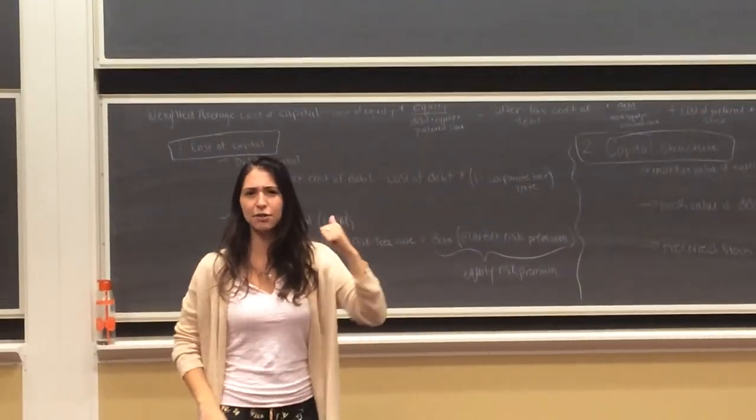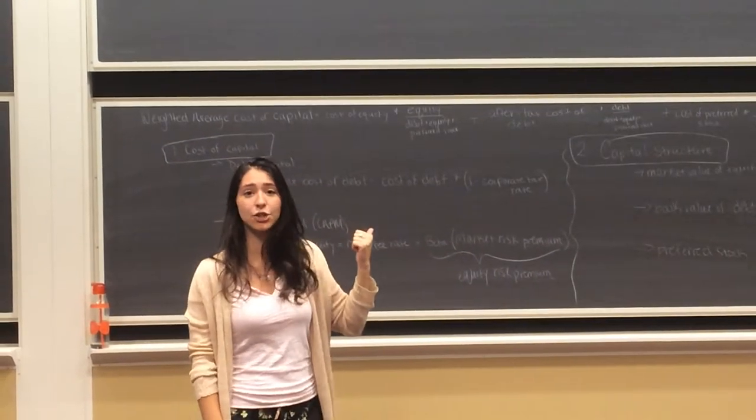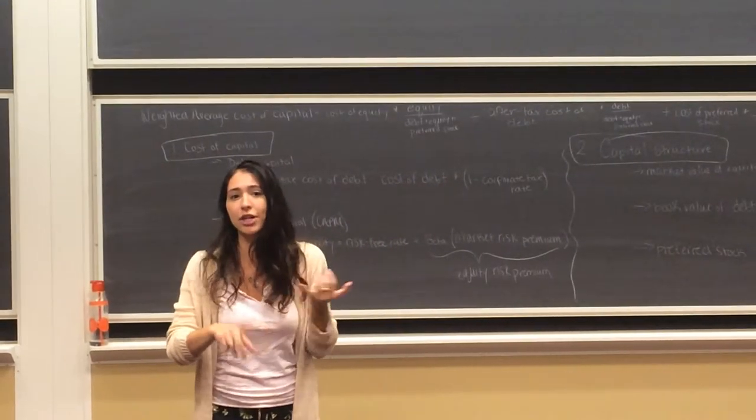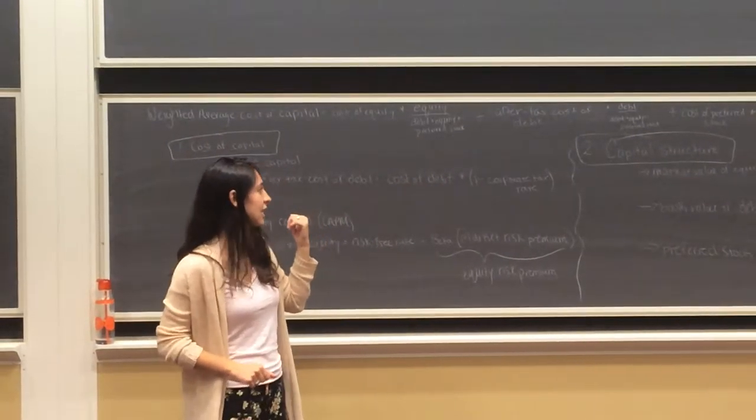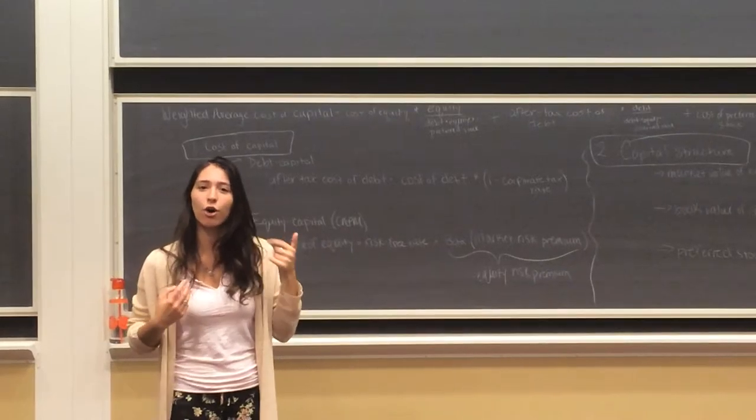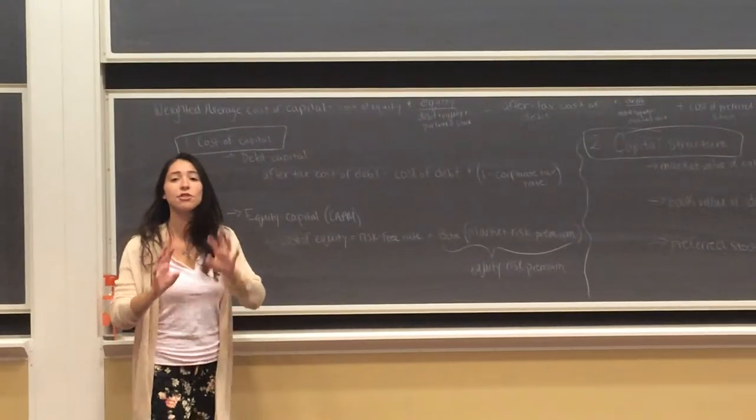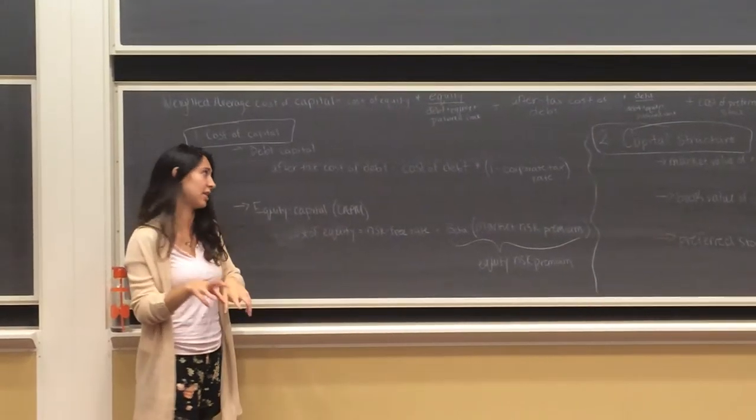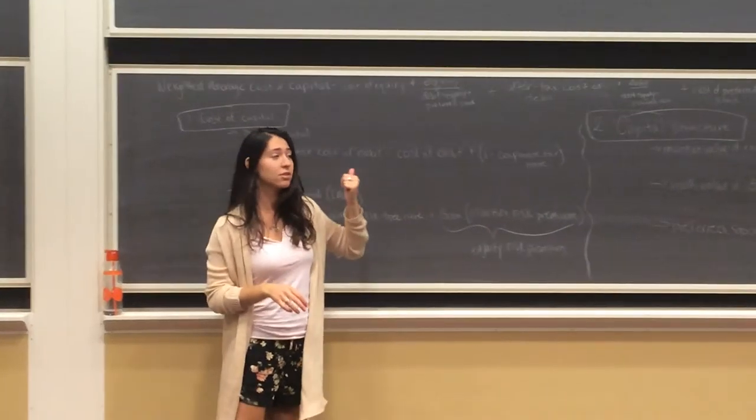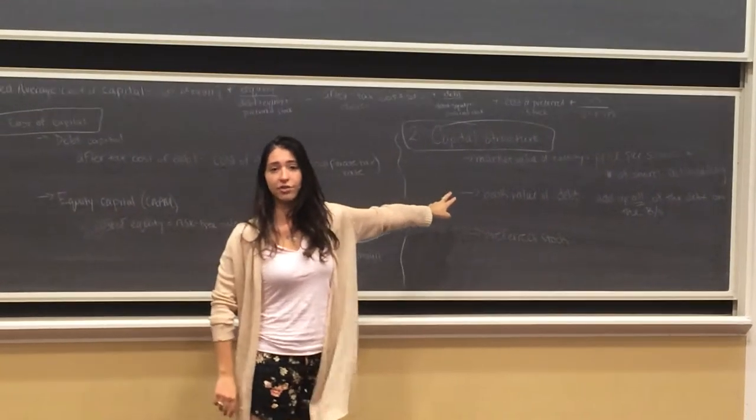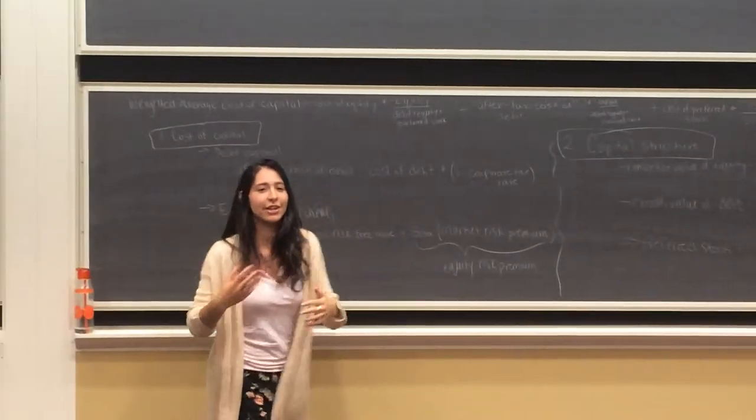So this might look long and involved and confusing. It's actually very easy to calculate. It's just addition, multiplication, very easy stuff. However, the inputs are kind of hard to derive. So we're going to break those inputs down a little bit more. So you basically have two process steps that you need to keep in mind, figuring out the cost of capital, and then figuring out the capital structure of the business. And this is harder than it will. So when you're figuring out the cost of capital, first you need to figure out debt capital and equity capital.